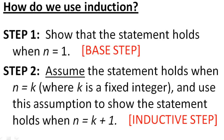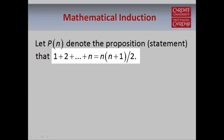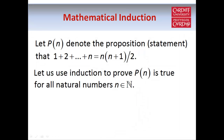Now let's see how this actually works in practice. Going back to our example, let pn denote the proposition or statement that we're trying to prove, which is that the sum of the first n natural numbers is equal to n times n plus 1 over 2. And we want to use induction to show this statement holds for all natural numbers n.